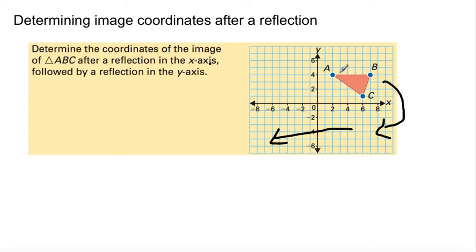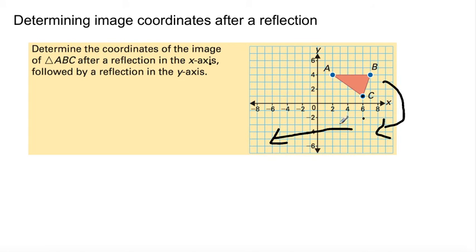Reflection in the x-axis means you're flipping over that line. It's like a pancake — you move it over the exact same distance from the axis. So C is going to end up here. B is on 4, so you're going to go to negative 4, right there.